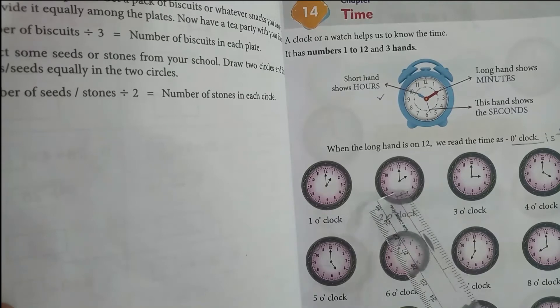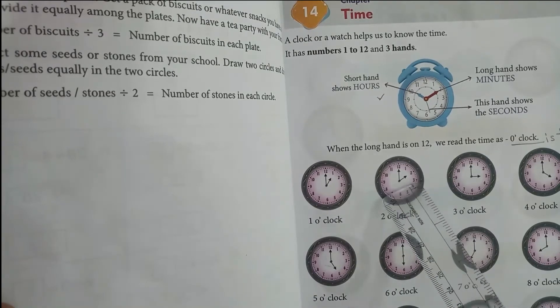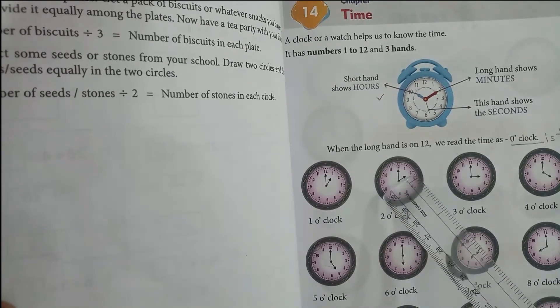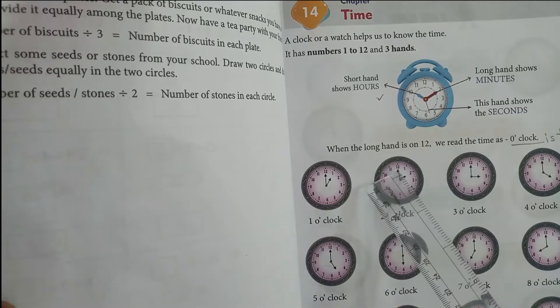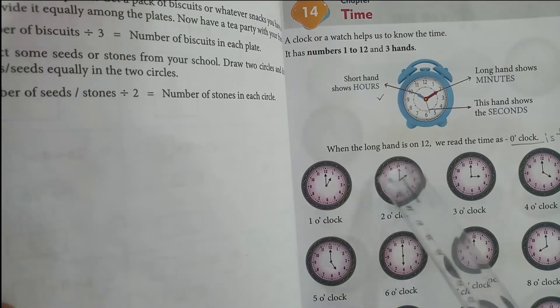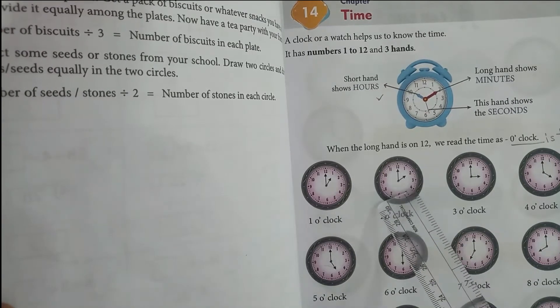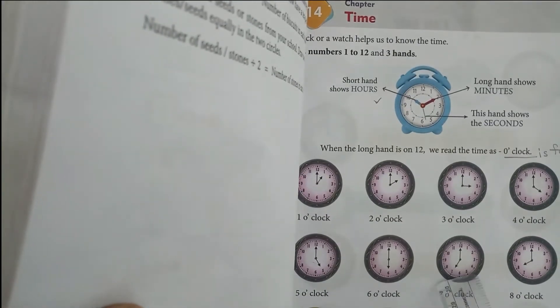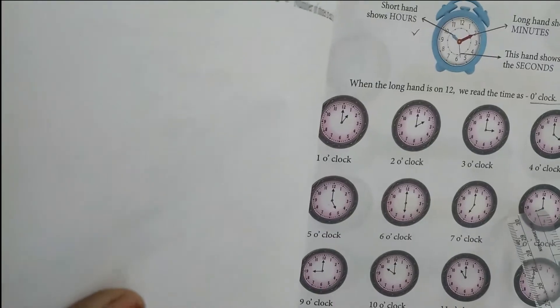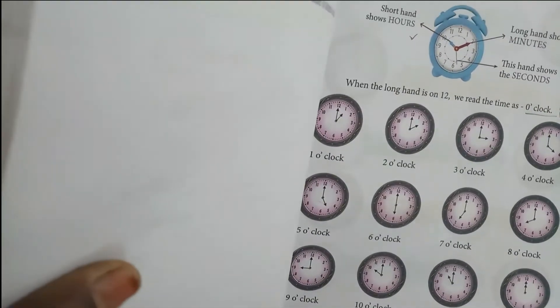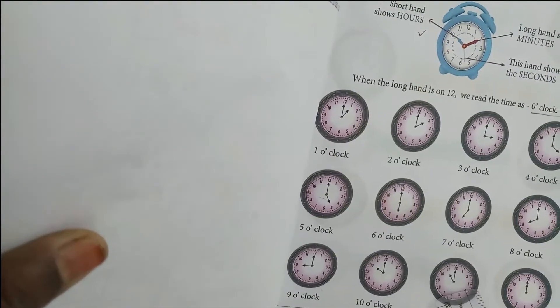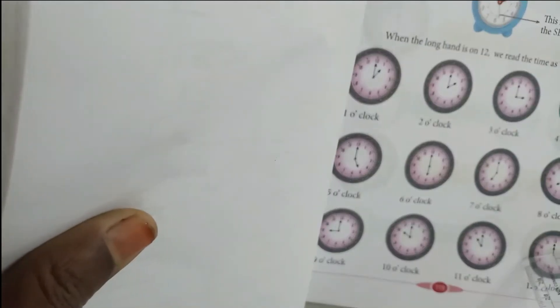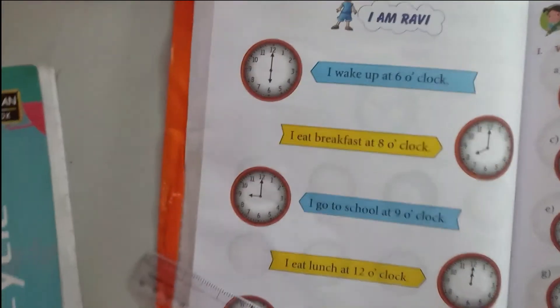Likewise here you see 2 o'clock. The short hand is pointing at 2 and the long hand is pointing at 12. Likewise 3 o'clock, 4 o'clock, 5 o'clock, 6 o'clock, 7 o'clock, 8 o'clock, 9 o'clock, 10 o'clock, 11 o'clock, and 12 o'clock.